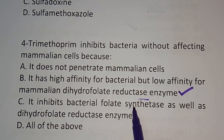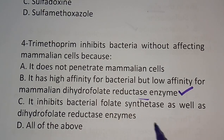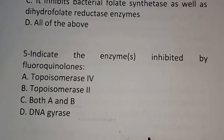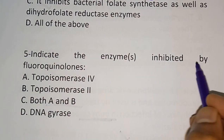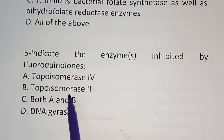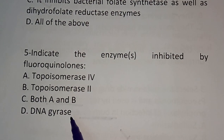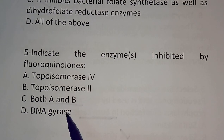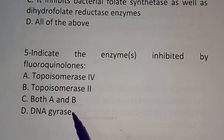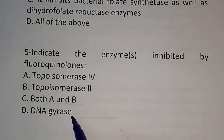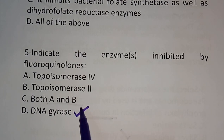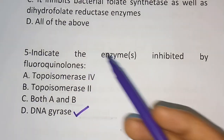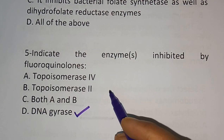Also note: sulfonamide is an example of a folate synthetase inhibitor. Question five: indicate the enzyme inhibited by fluoroquinolones. Options are: topoisomerase 4, topoisomerase 2, both A and B, DNA gyrase. The correct answer is DNA gyrase. Examples of fluoroquinolones are ciprofloxacin, levofloxacin, moxifloxacin — all ending with 'floxacin'.